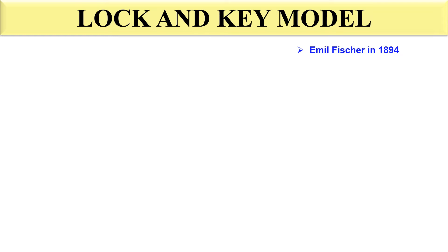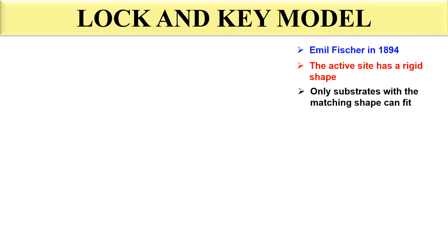First, I am discussing the Lock and Key Model. This model was given by Emil Fisher in 1894. According to this model, the active site of the enzyme has a rigid shape — it does not change. Only the substrate that has a perfect match with that active site will fit into it. Any other substrate that does not completely match with the active site will not enter it and will not proceed for the reaction. Only the completely matched substrate will enter the active site and bind to the enzyme.